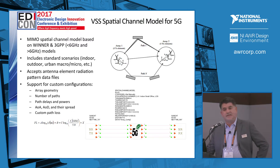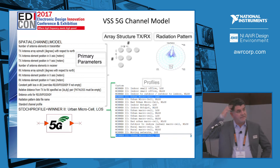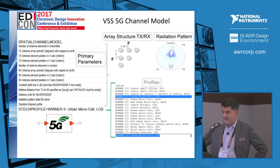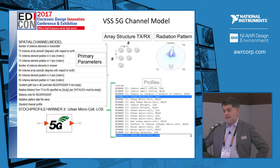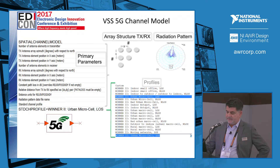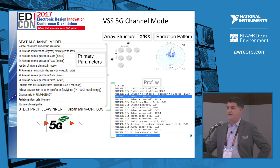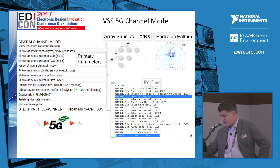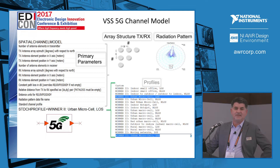A proper simulation tool should have a user interface that's easy to understand. The primary parameters you have access to are the number of transmit and receive antennas, along with the position of each antenna in the x and y directions. You also have an option to apply the same radiation pattern to all elements. One can further describe the profile of the channel model — there are Wiener models ranging from an indoor small office line-of-sight to something called a bad urban macro cell.